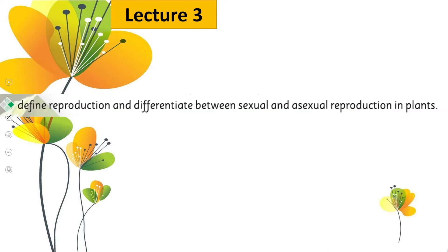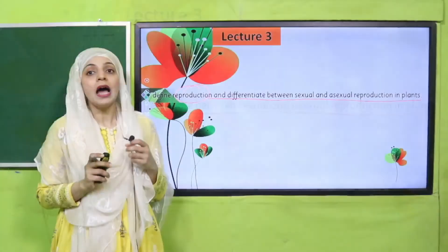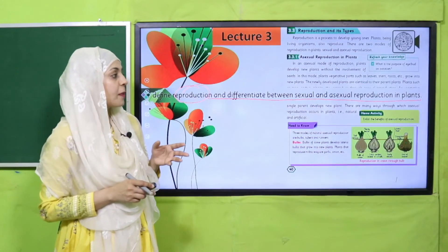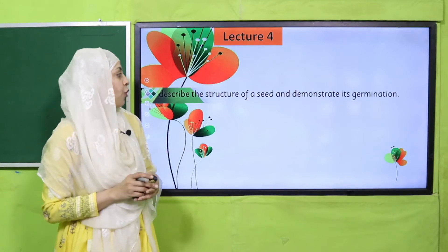Then we will move forward towards lecture number three, where the students will be able to define reproduction and differentiate between sexual and asexual reproduction. Plants mein sexual and asexual reproductions hote hain — hum un ke baare mein discuss kareenge. The reading page for this is page number 40.